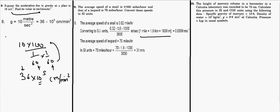To convert the snail's speed of 0.02 miles/hour to m/s: multiply by 1600 (miles to meters) and divide by 3600 (hours to seconds), giving 0.0089 m/s. For the leopard at 70 miles/hour: multiply by 1600 and divide by 3600, giving approximately 31 m/s.